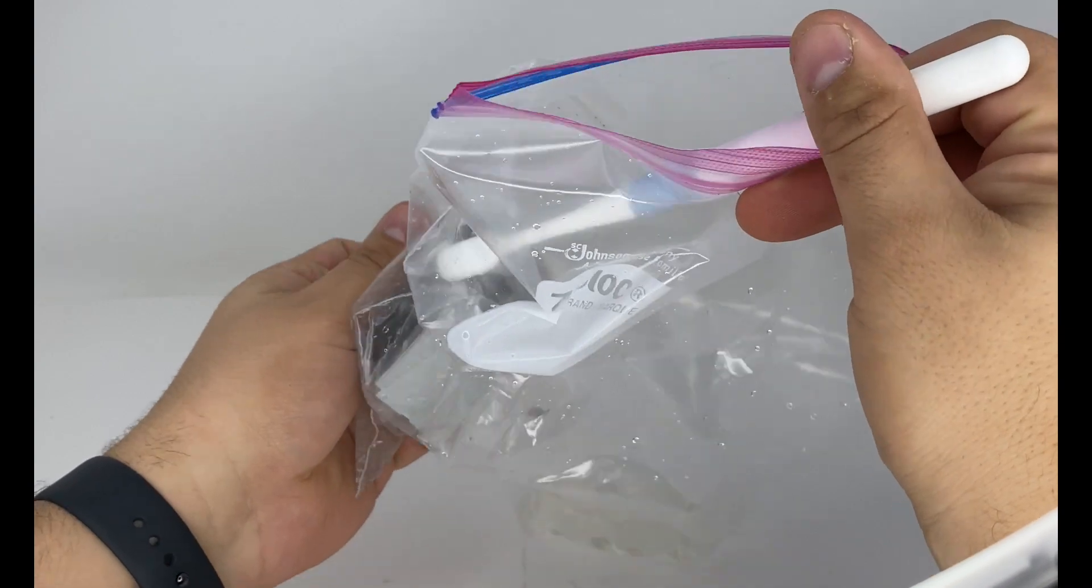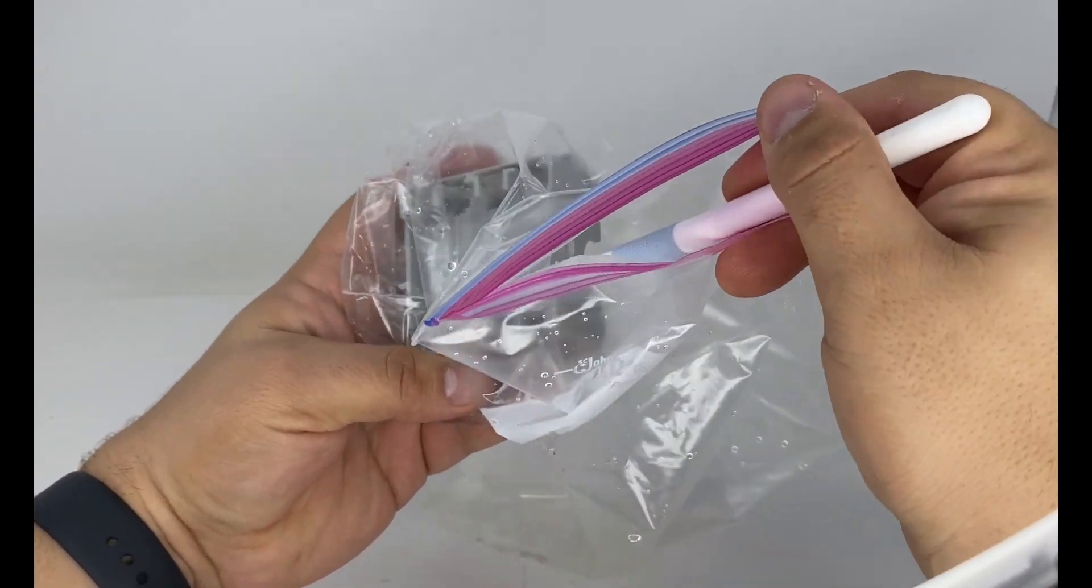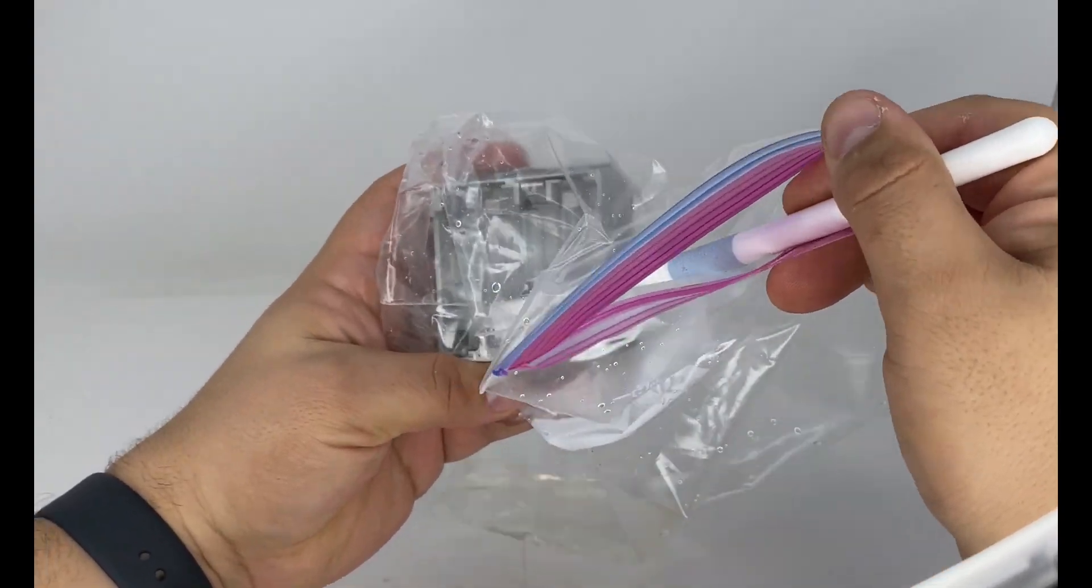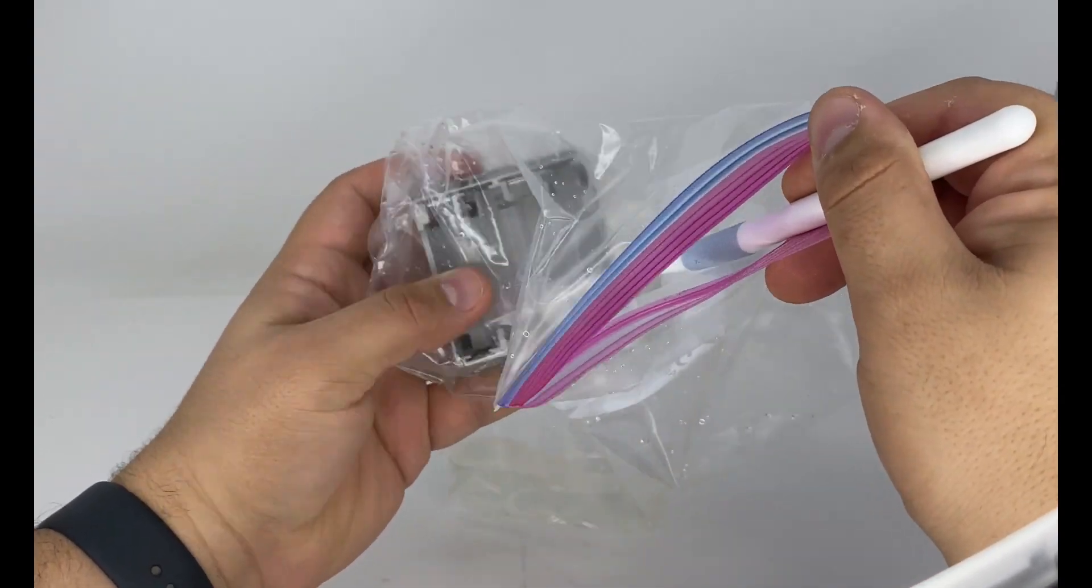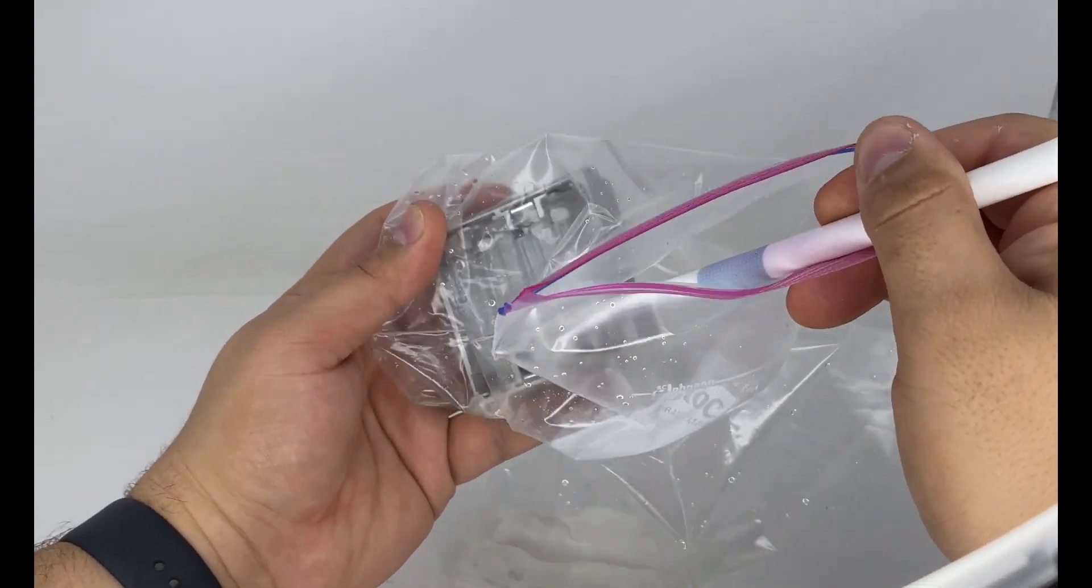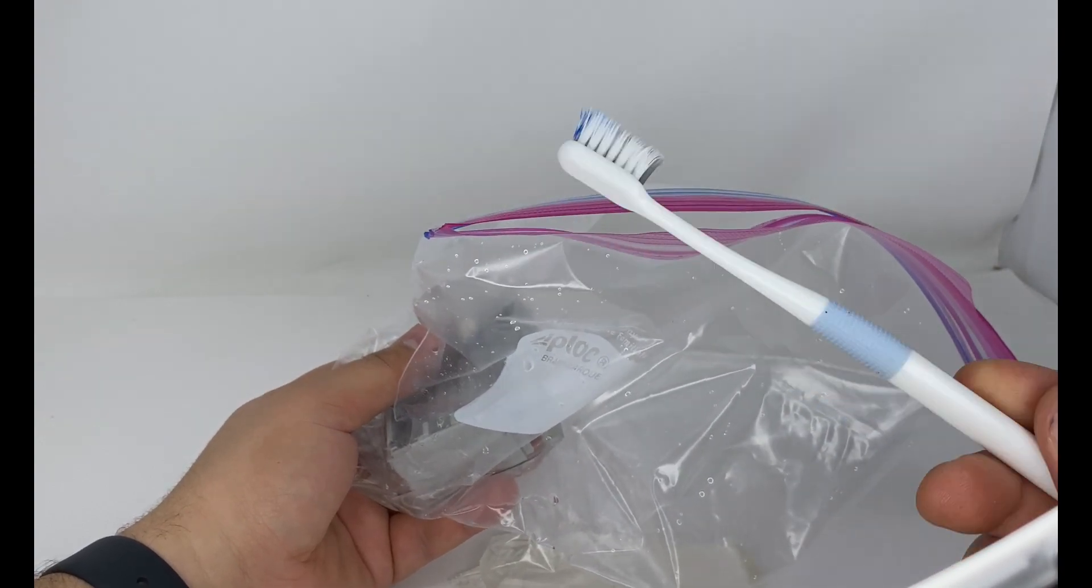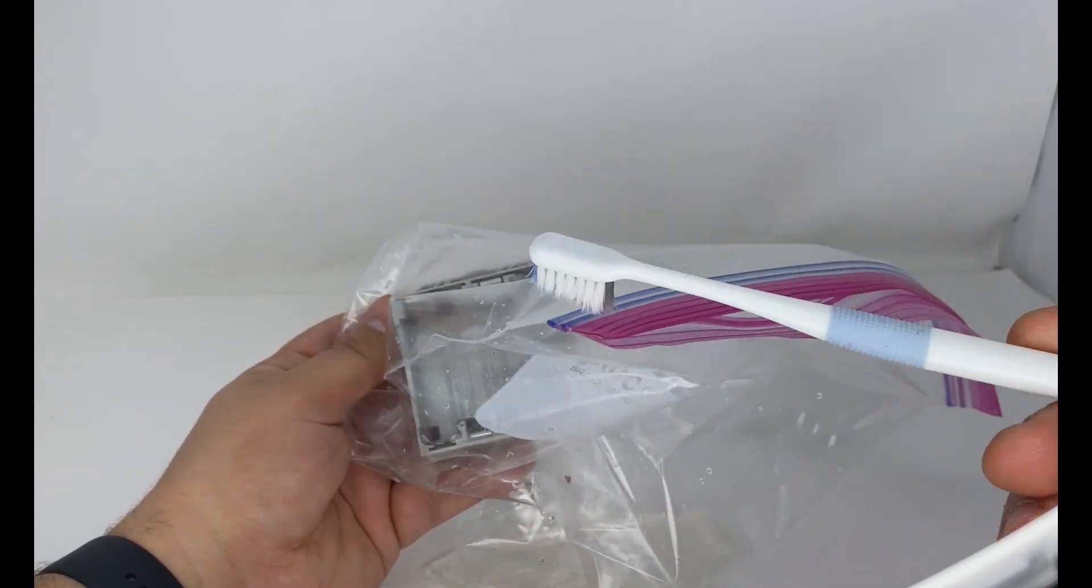So when you're doing this on electronics, then of course you're not going to be able to soak it. You're not going to be able to do it like this in a bag, but still you can use the same way to soak your toothbrush in vinegar and just work your way in.